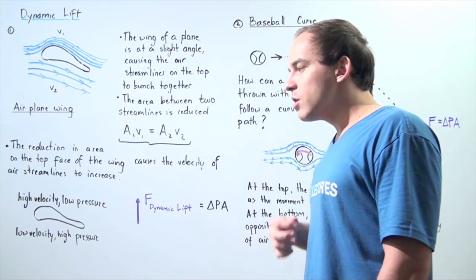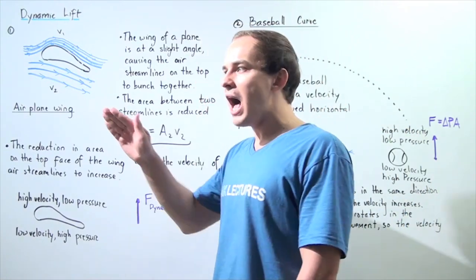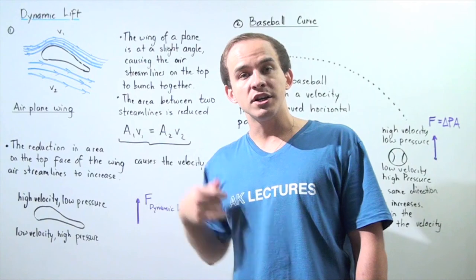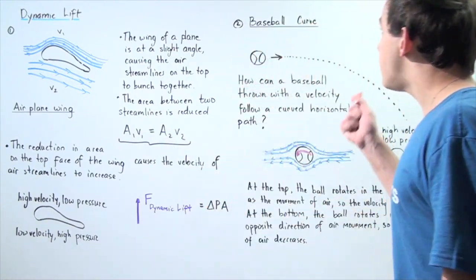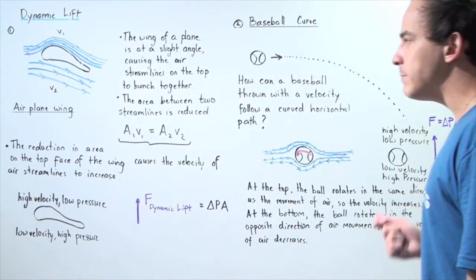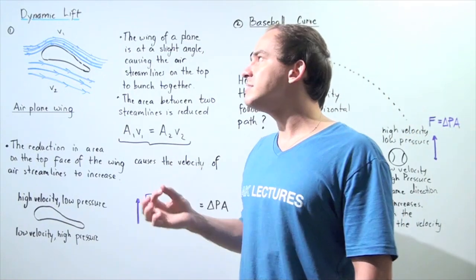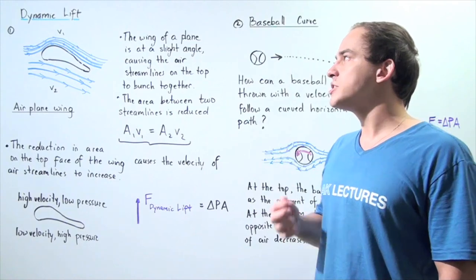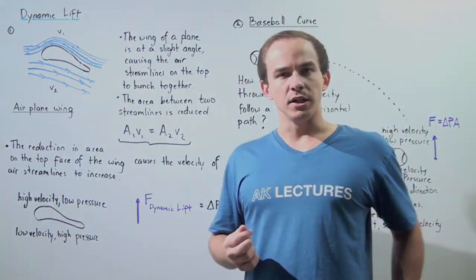The reason airplanes are able to fly and remain in the air as they travel along the horizontal axis, and the reason baseballs or tennis balls are able to curve, is because of a concept known as dynamic lift, which is explained using Bernoulli's principle.